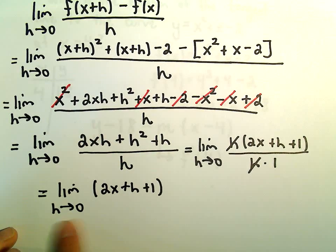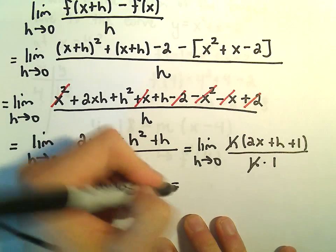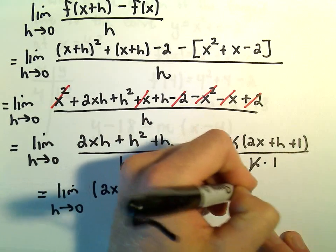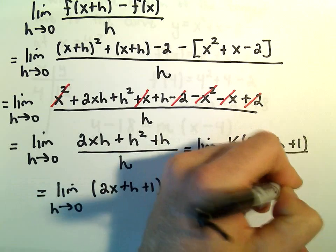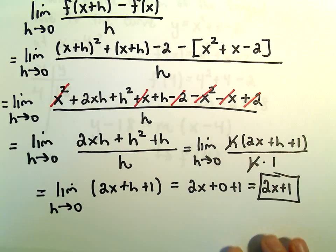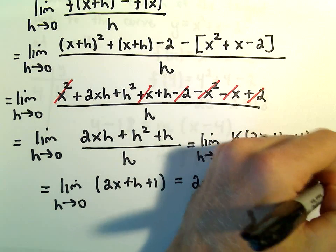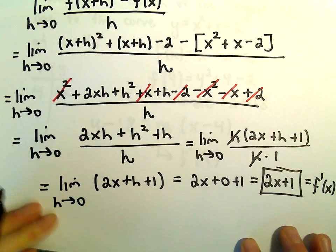Now we just substitute in h equals 0. So we'll get 2x plus 0 plus 1, or 2x plus 1. And that's now going to be a formula for our derivative. So a little bit of work there to find the derivative.